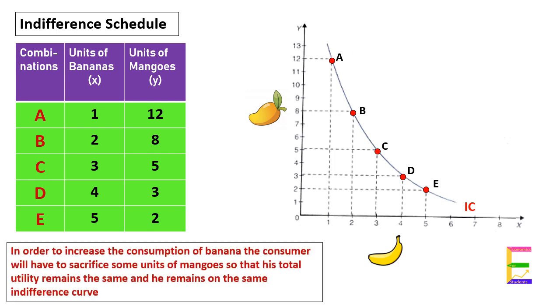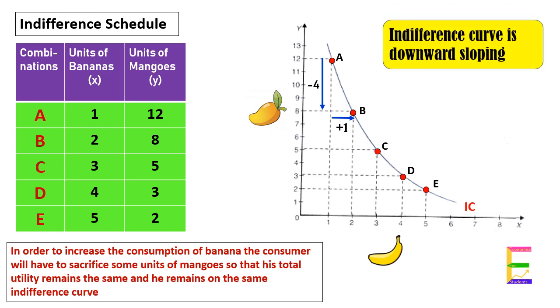Notice that in order to increase the consumption of banana, the consumer will have to sacrifice some units of mangoes so that his total utility remains the same and he remains on the same indifference curve. So indifference curves are downward sloping.